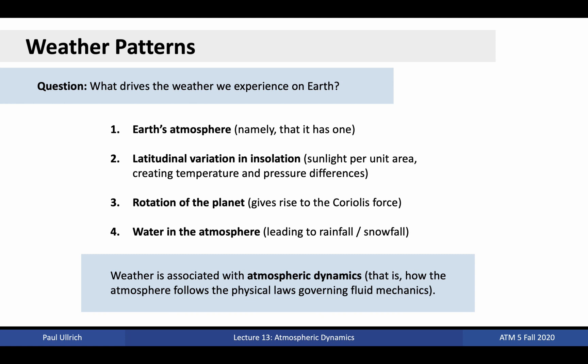Second, latitudinal variation in insolation is responsible for driving temperature and pressure differences within the Earth's atmosphere. This latitudinal variation occurs because the Earth is a sphere. With radiation being more direct at the equator than the pole, temperatures are enhanced at the equator relative to the pole, leading to an imbalance of energy. Pressure differences created by this imbalance are then responsible for driving weather, which acts to even out these differences.